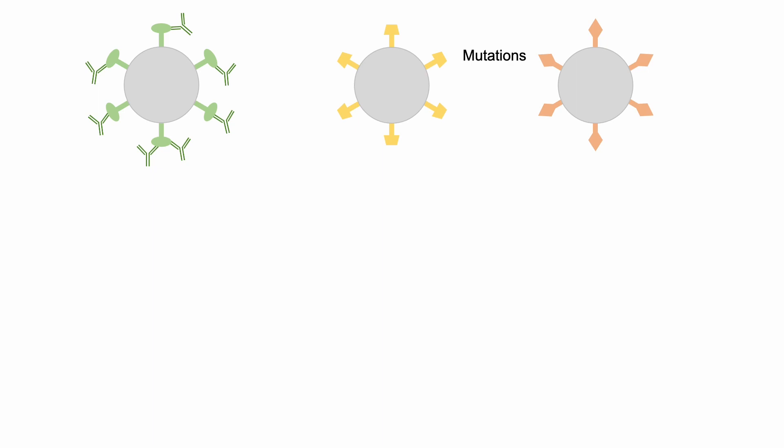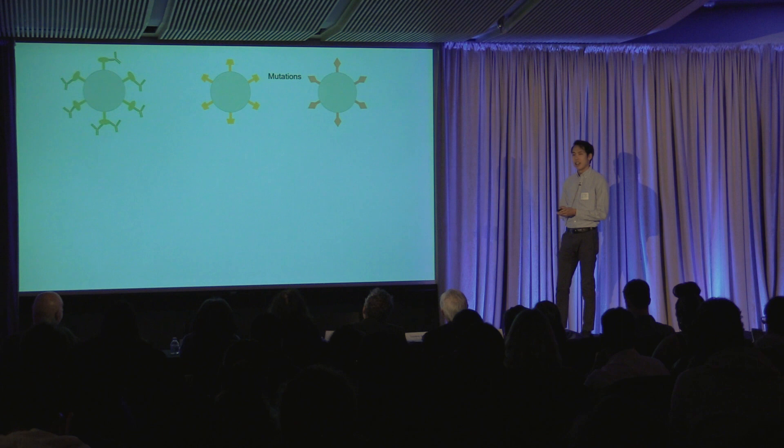However, each new COVID variant often has mutations in the spike protein that change its shape, shown in yellow and orange. Now the virus looks a little different, allowing it to escape the immune system and rendering the vaccine less effective.